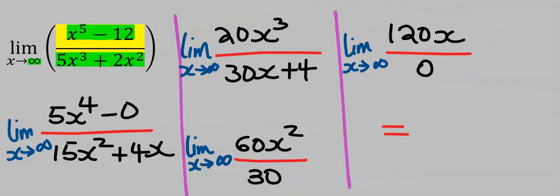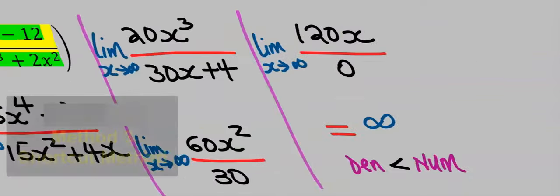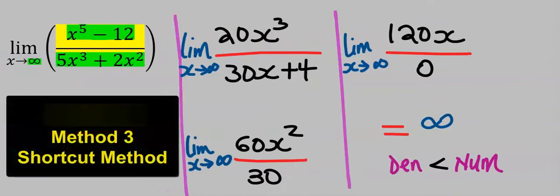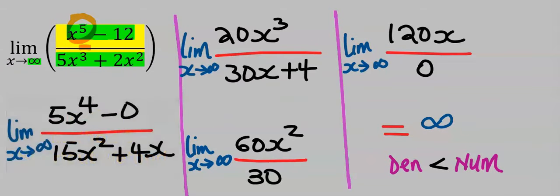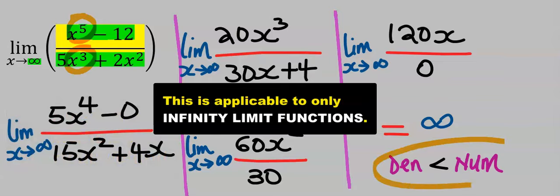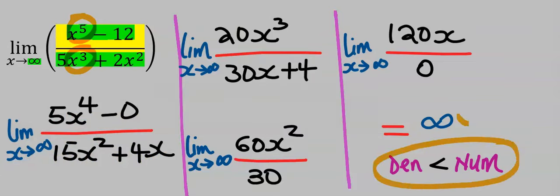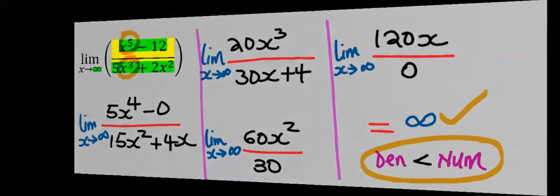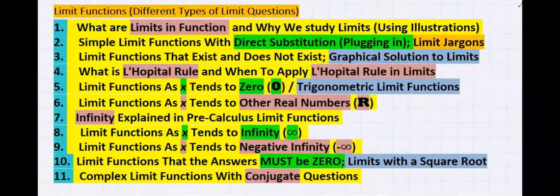Any number or variable that divides by zero is undefined. Alternatively, whenever the power of the numerator is greater than the power of the denominator, your answer is always infinity. Always remember this. You can check out other videos.